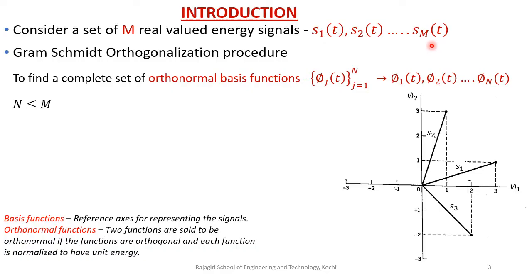Using this procedure we will be finding N orthonormal basis functions given by φ1(t), φ2(t), ..., φN(t). An orthonormal basis function must satisfy two conditions: they should be mutually perpendicular or orthogonal to one another, and they should be normalized to have unit energy. As you can see in this figure, we have two axes φ1 and φ2, representing the two orthonormal basis functions — mutually perpendicular and normalized to unit energy. Here three signals s1, s2, s3 are represented as points in a two-dimensional space.